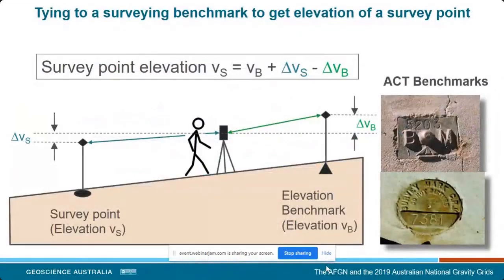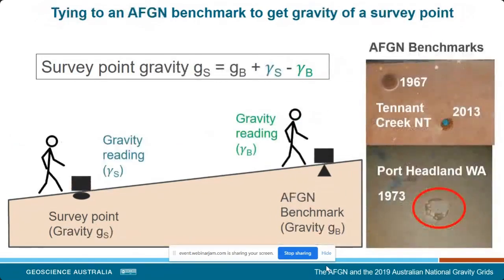Using that known elevation, they take a reading over the site they want to know the elevation for, and using a simple equation they calculate the new elevation value. Similarly for gravity, they take a reading at one of our AFGN stations, go to the new location, note the change in gravity, and then work out the new gravity value.